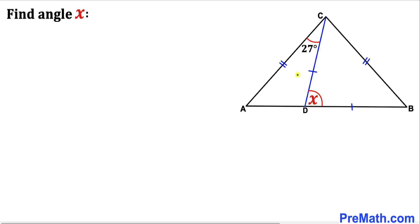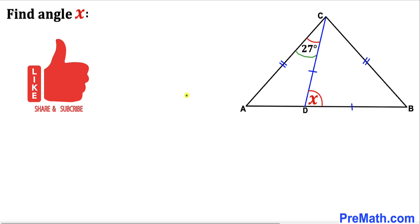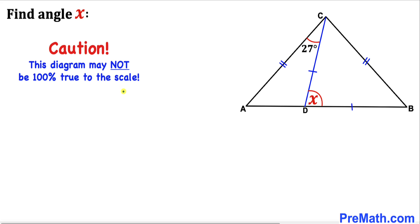Welcome to pre-math. In this video we have triangle ABC such that angle ACD is 27 degrees, side length AC equals side length BC, side length BD equals side length CD, and we are going to calculate angle BDC. Note that this figure may not be 100% true to scale.